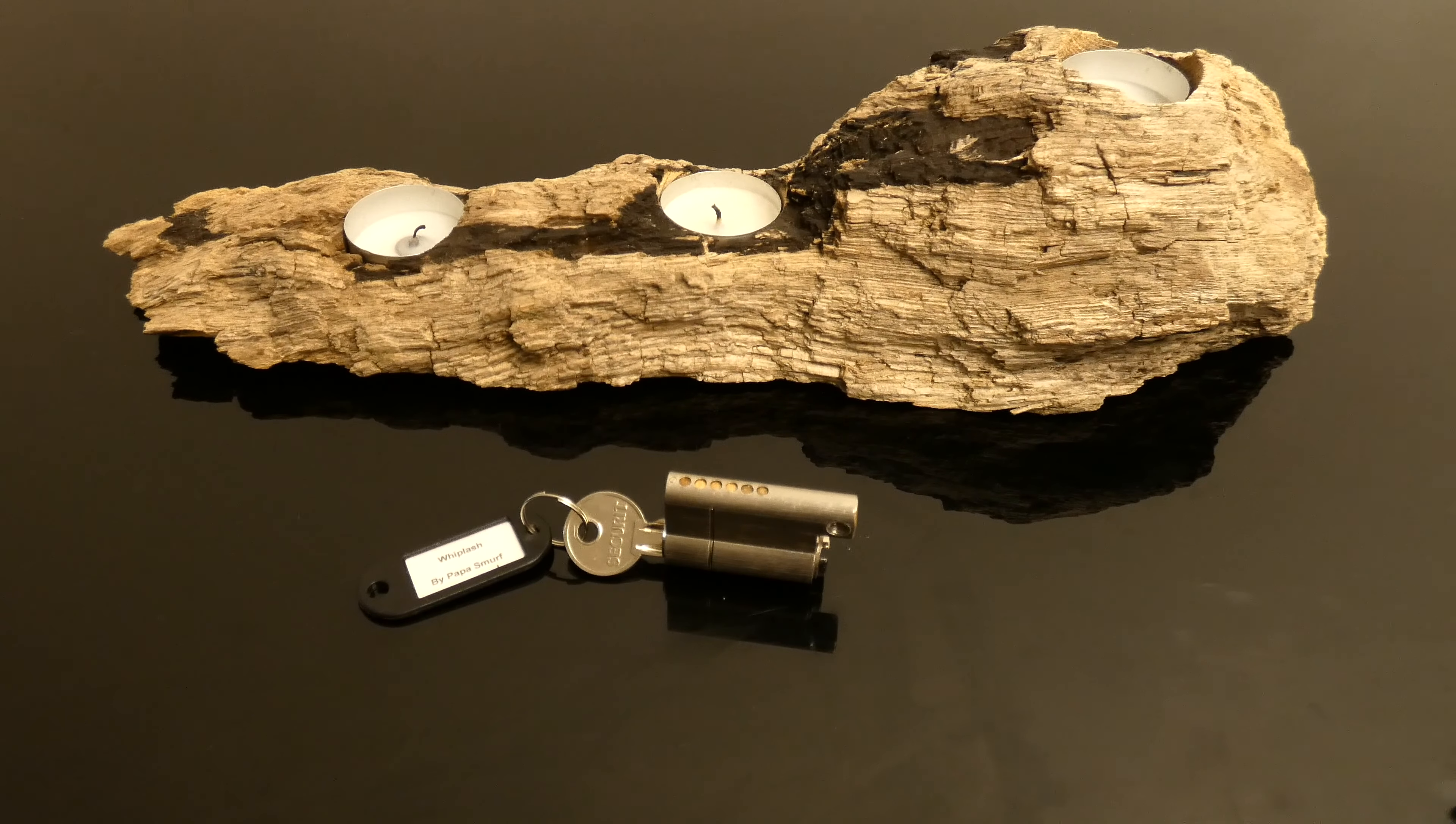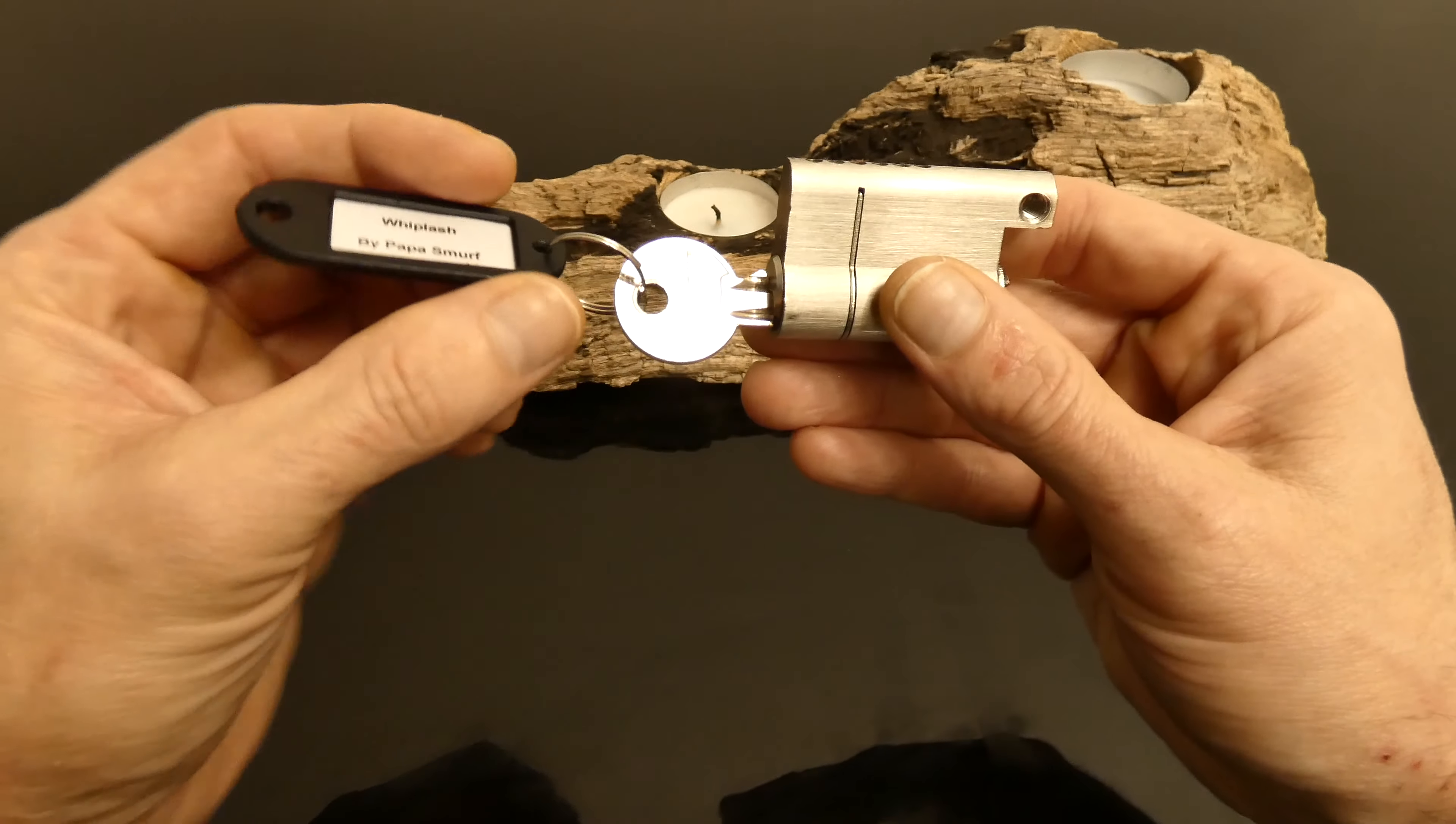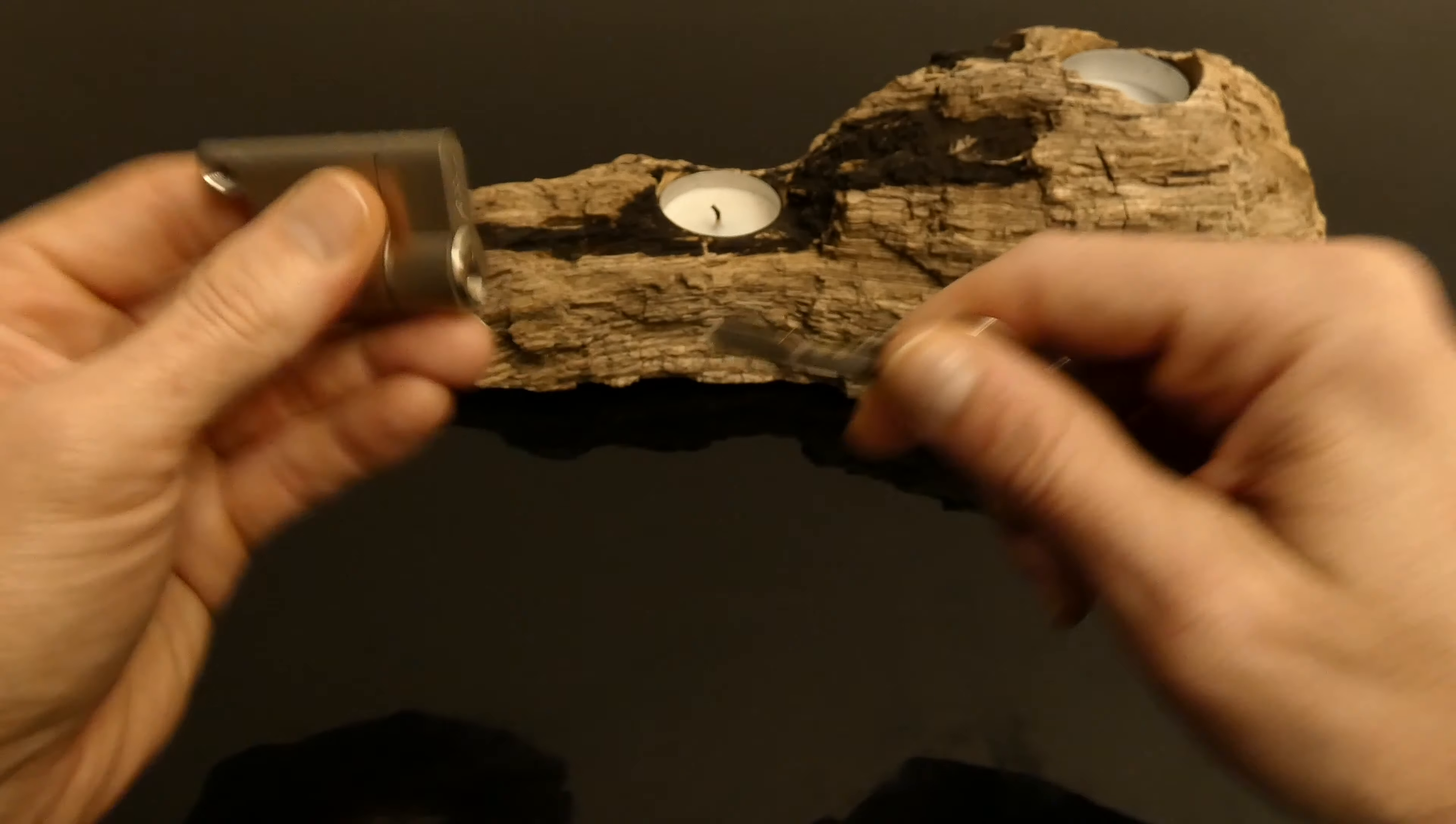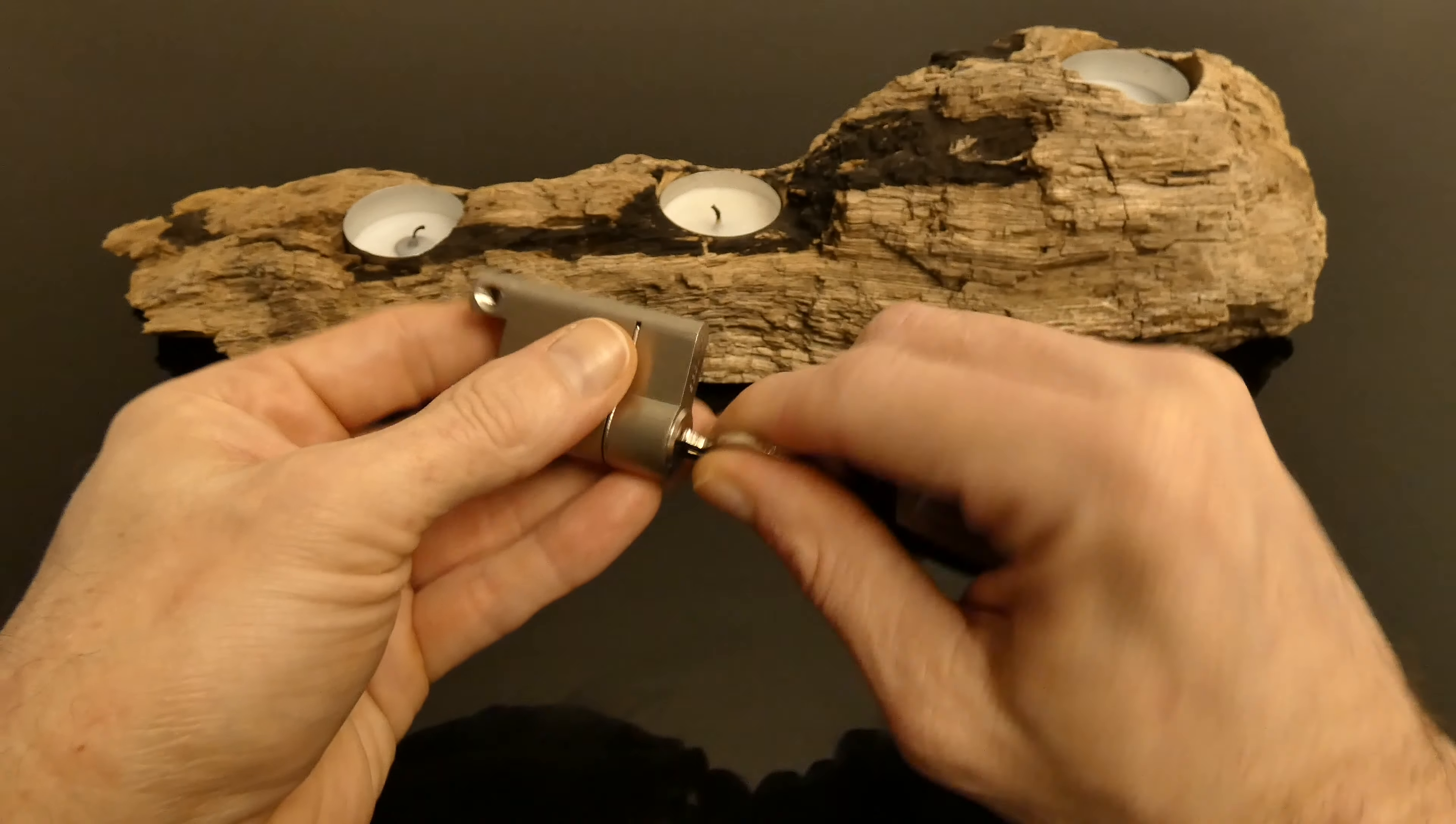Hi, welcome back to the channel. In today's video we have the third lock from Papa Smurf's mandatory metal challenge lock box set. Today's is Whiplash, based on a six-pin Sparrows lock. Works quite nice. That's the bitting—a couple of high-set pins at the back we're going to need to work through.